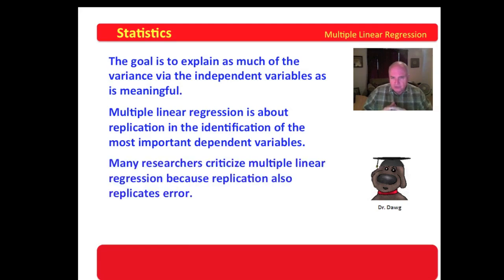Many researchers criticize multiple linear regression because replication also replicates error. But friends, I will tell you this: anything that is replicated replicates error. I hate to quote the great statistician George Box, who said all methodologies are wrong. He was correct. But he did add that some are, however, useful. There is no perfect methodology. Multiple linear regression is by no means perfect, but it may prove useful.